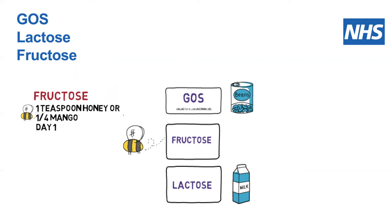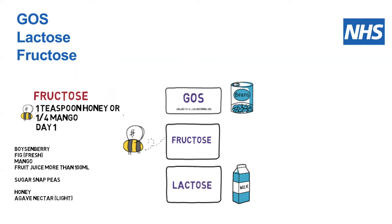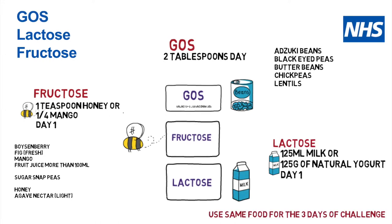If you tolerate honey or mango, the chances are you will tolerate other foods that contain fructose, such as fresh figs, fruit juice with more than 100 millilitres, sugar snap peas, and agave nectar. For galacto-oligosaccharides, you would start with two tablespoons on day one, four tablespoons on day two, and six tablespoons on day three. You could choose any one of these foods: butter beans, black-eyed peas, chickpeas, or lentils.